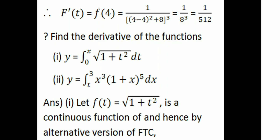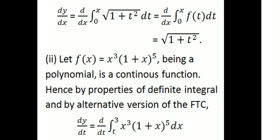Find the derivative of the following functions. First question: y equals the integral from 0 to x of root (1 plus t squared) dt. Let f of t equal to root (1 plus t squared), which is a non-negative and continuous function. By the alternative version of the Fundamental Theorem of Calculus, dy by dx equals d by dx of the integral from 0 to x of root (1 plus t squared) dt equals root (1 plus x squared).